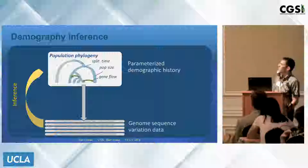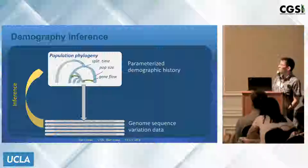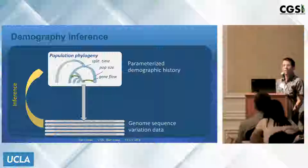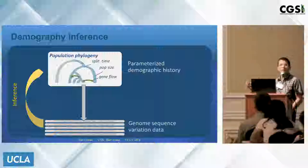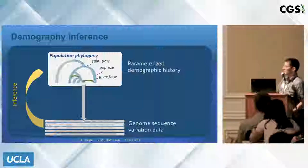We want to infer these types of histories — the structure and parameter values — from genome sequence data. There are many ways to do that, but first you have to understand the models: how population history affects genome sequence variation. Kirk talked about that in his talk on dominance coefficients — he had to factor out the effect of demography. We're actually interested in understanding the demography itself, and I'll show you why it can be interesting even if you're not interested in GWAS.